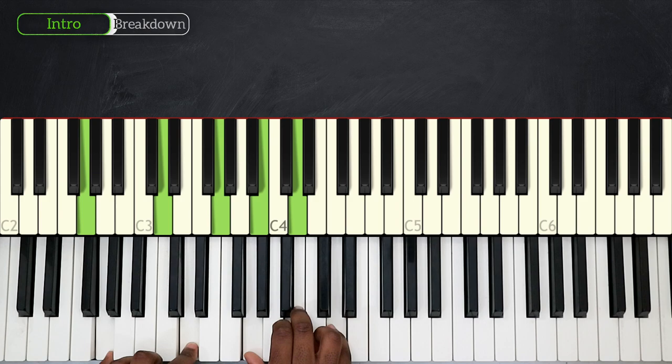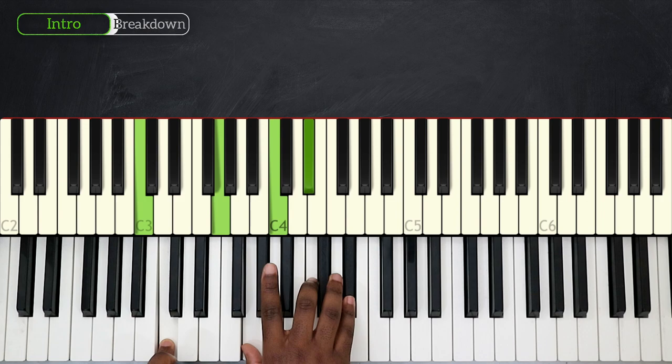And also watch out for the rhythm on that C minor. It falls on the end of the first beat. So we play G major for the whole measure. Then on the end of the second measure, the end of the first beat of the second measure, that's when we're going to play our C minor chord. So just take notice of that.